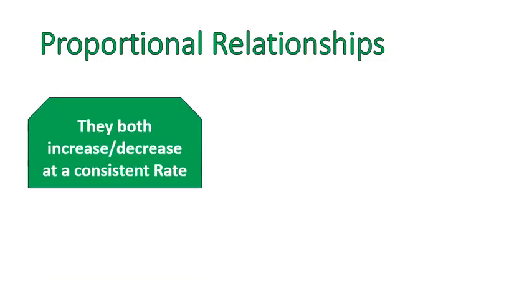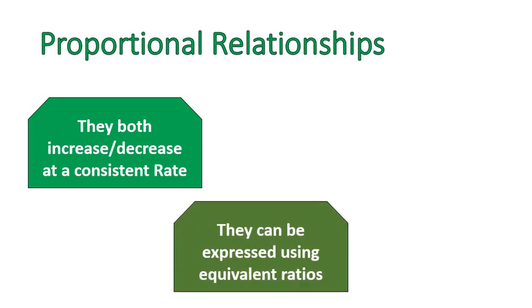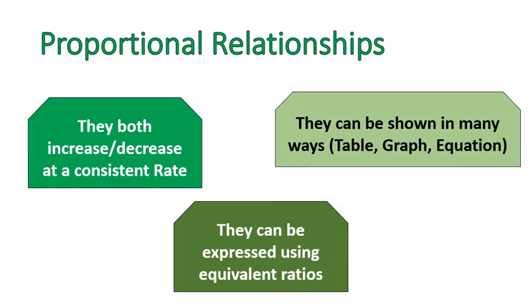Proportional relationships mean that there are two numbers, and they change consistently. So if they increase, they'll increase consistently. If they decrease, they decrease consistently. The increase or decrease is at a consistent rate, and that's an important word that we'll be using today. They can be expressed using equivalent ratios, and they can be shown in many ways, like on tables, graphs, or equations, and I'll try and show examples of each of those.